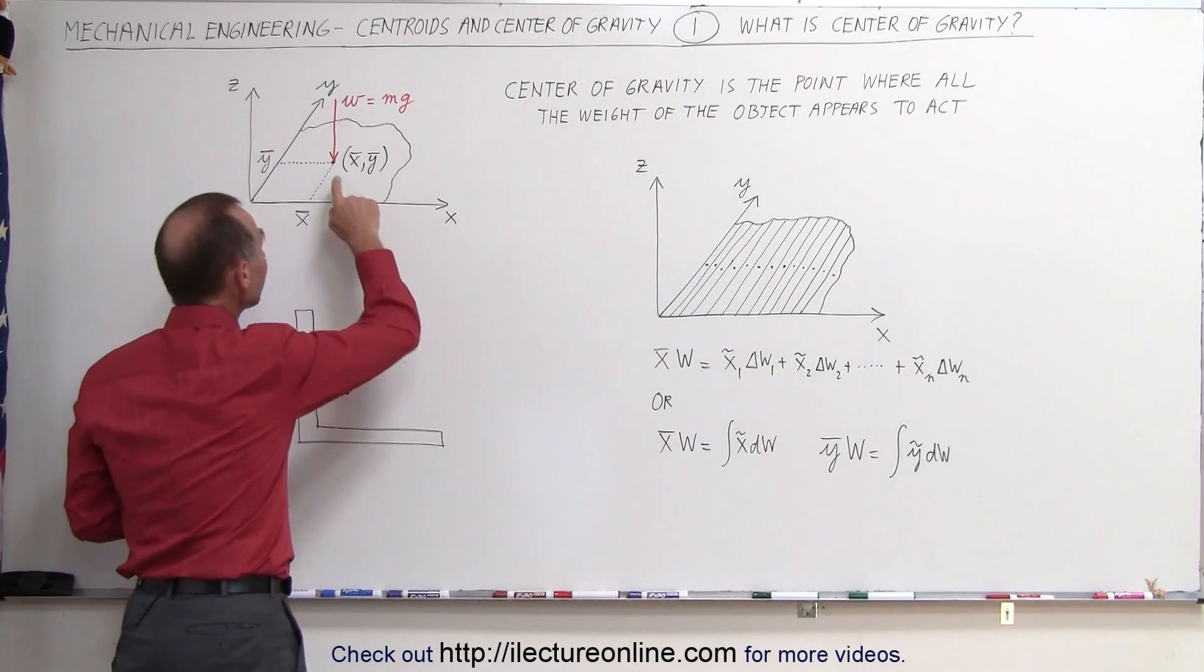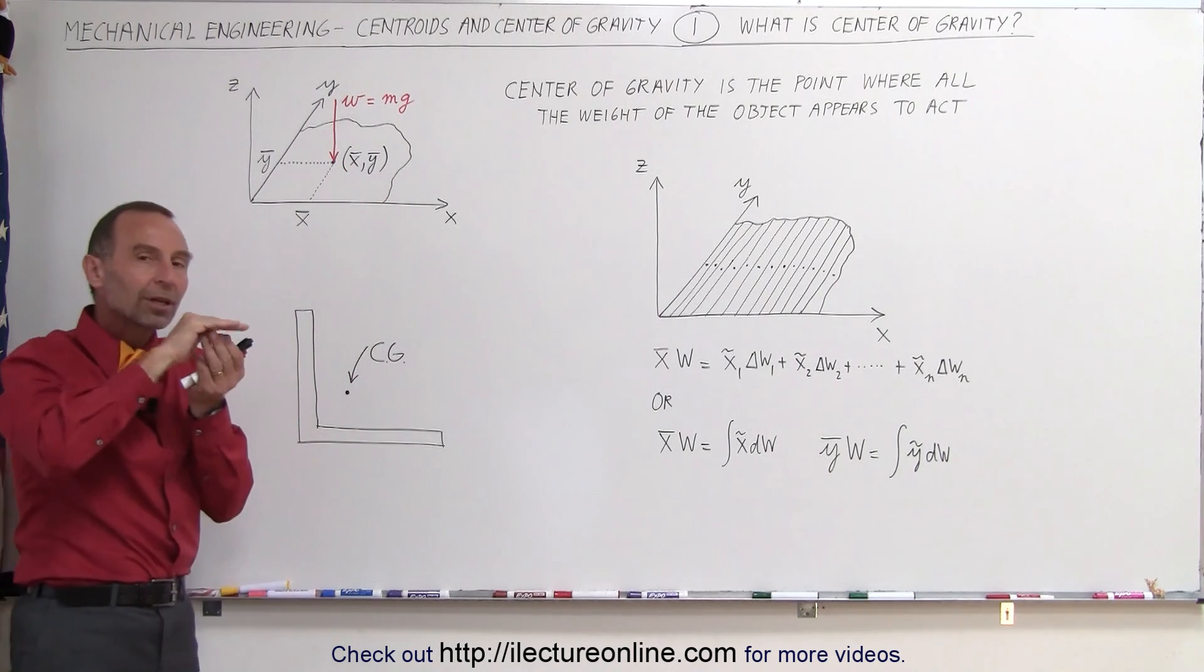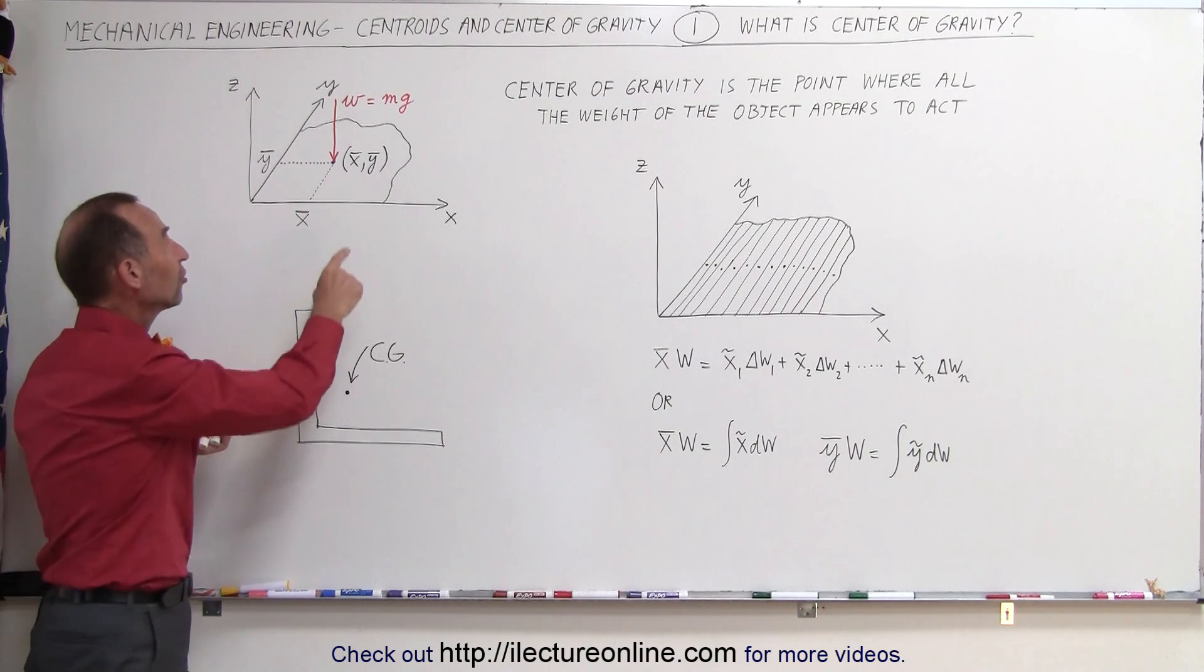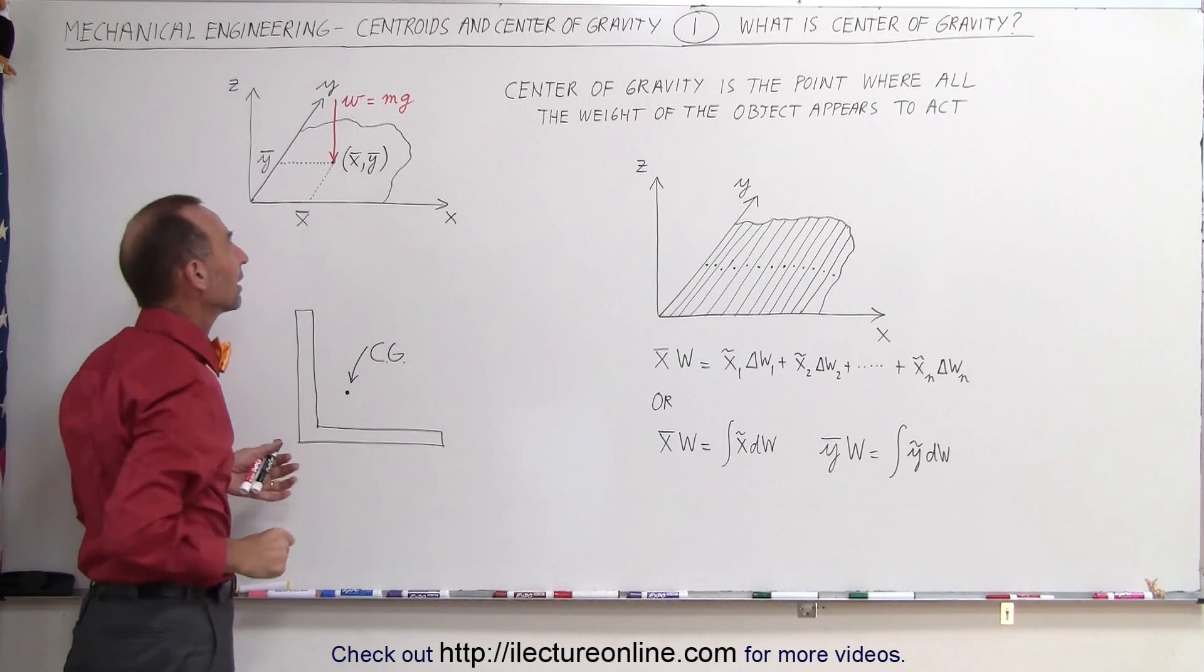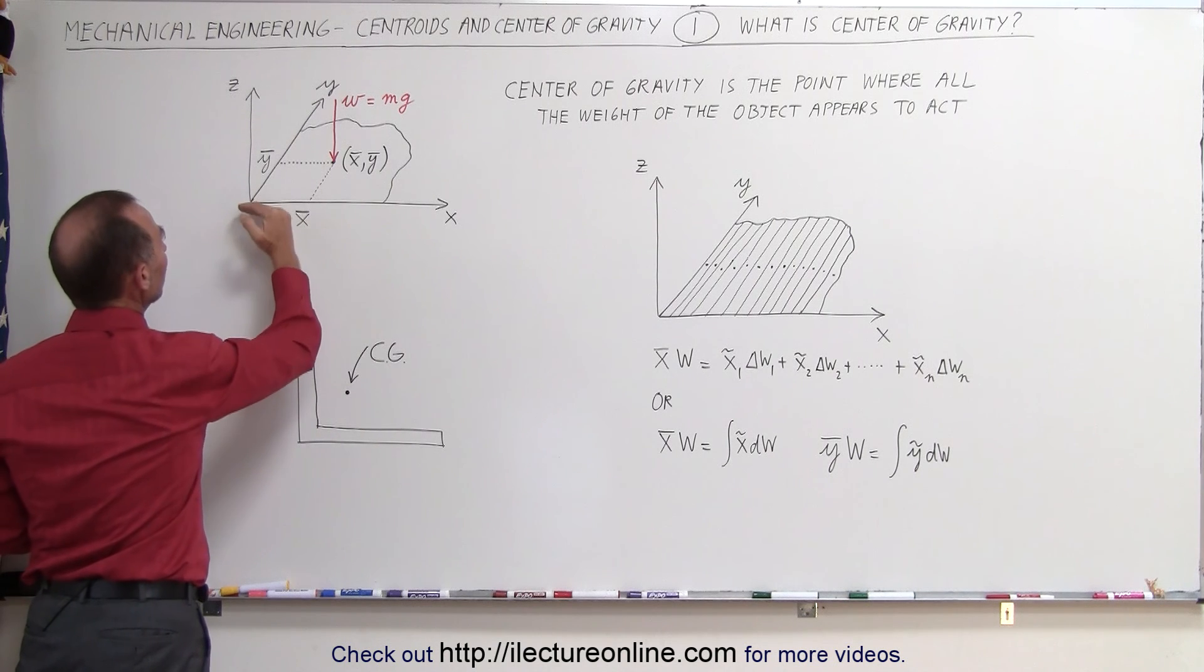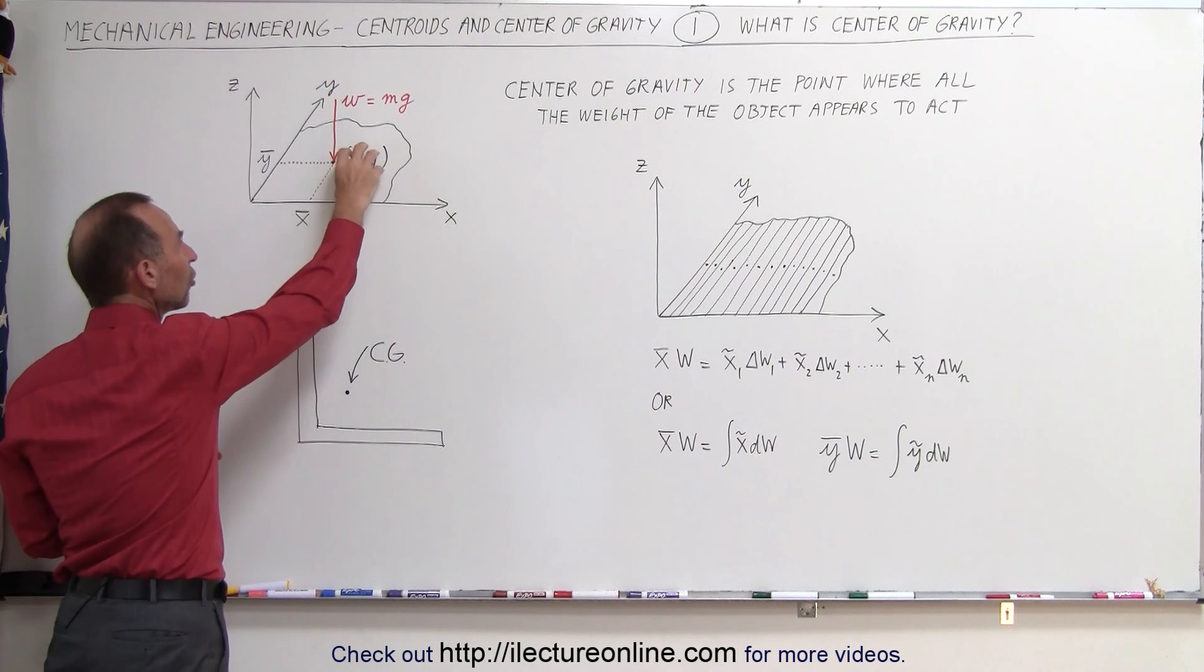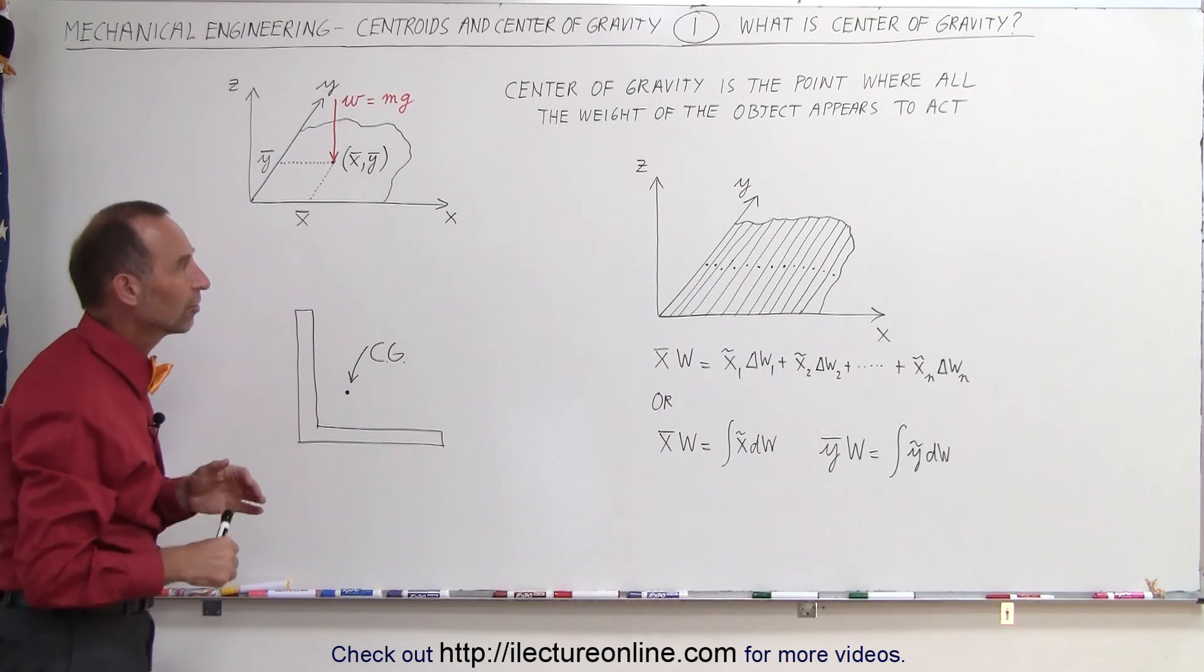The center of gravity here has what we call an x and a y coordinate. And notice we put a little line on top. That doesn't mean the average x and y, it simply means the center of gravity of this object, and these are the coordinates x and y of that particular point called the center of gravity. So that would be the distance away from the origin in the x direction, the distance away from the origin in the y direction, because these are usually associated relative to the origin of the x, y, and z coordinate system.